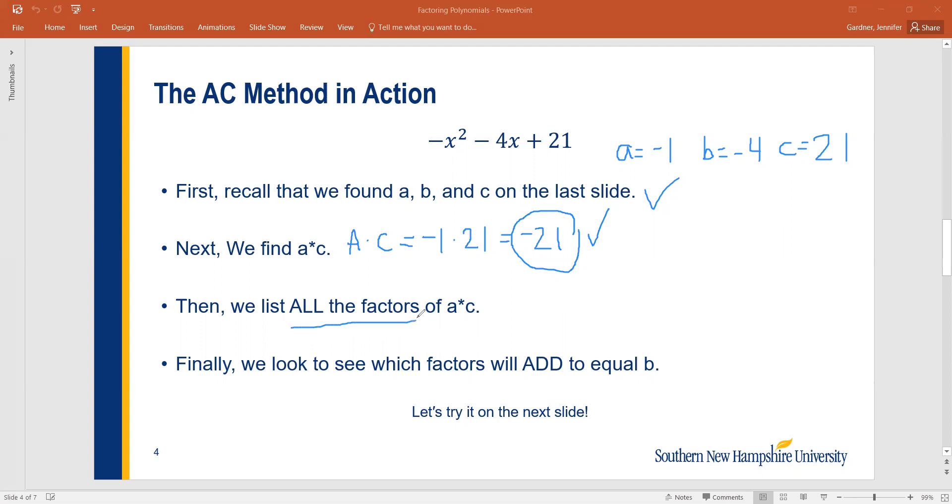Now we're going to list all the factors of A times C, meaning of negative 21. So if we have negative 21, we're going to list everything that can multiply to negative 21, all the pairs. So negative 21 could be negative 7 times 3. It could be negative 3 times 7. It could be 21 times negative 1, and it could be negative 21 times a positive 1. We have to list out all of those because we need to know every factor in order to figure out the next part. So this is everything that 21 can break down to.